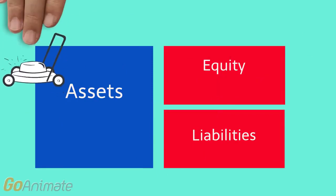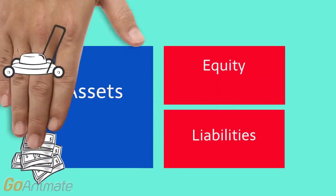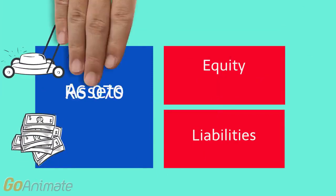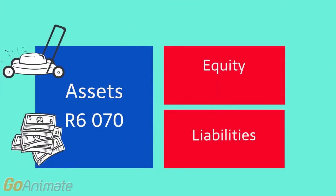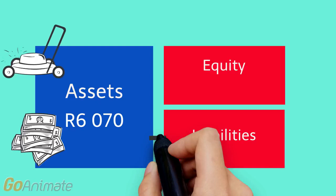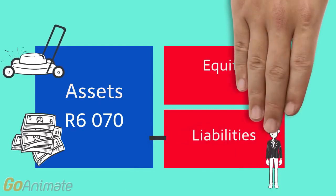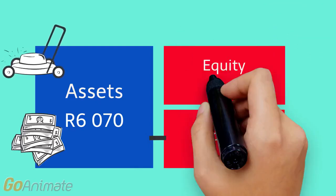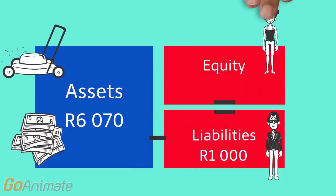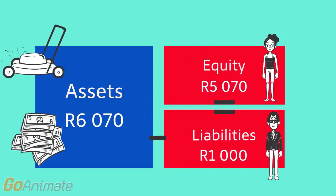So Nandi has assets of 6,070. If we take away her liability of 1,000, it leaves her with her equity of 5,070.